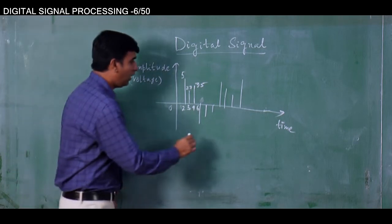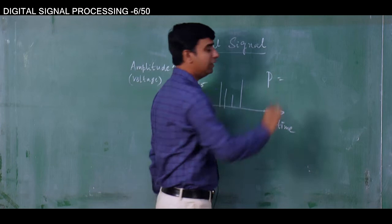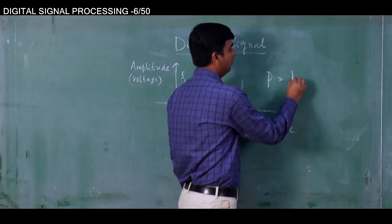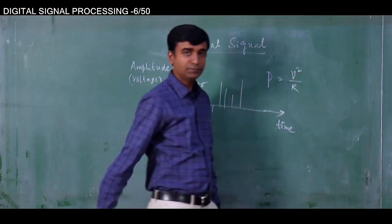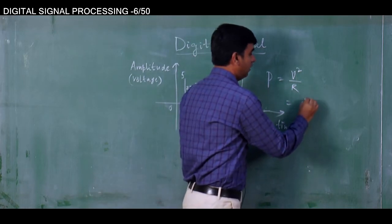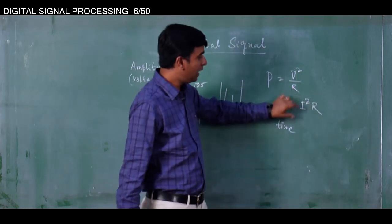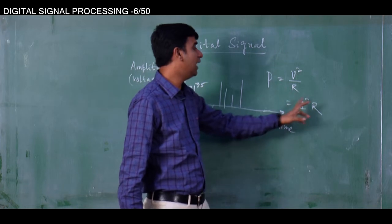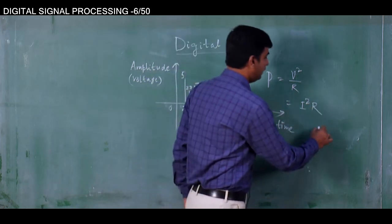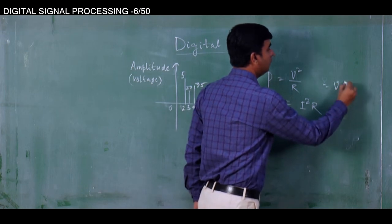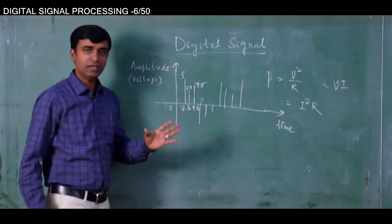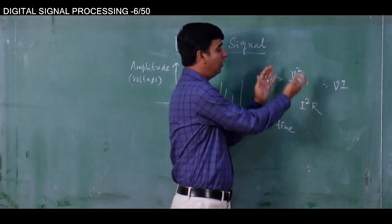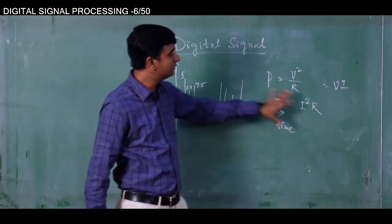How do you calculate power? Power P is calculated as either V squared divided by R, or I squared times R, where I is current, V is voltage, and R is resistance. We can also write P as equal to V times I. That means power is proportional to the voltage signal or proportional to the current signal — that is clear from all these expressions.